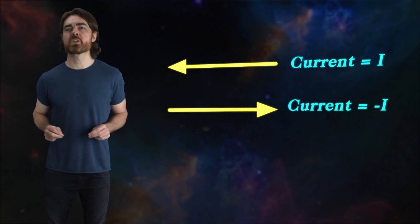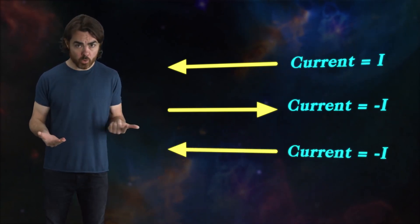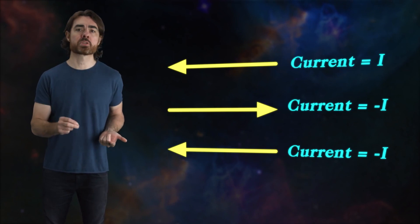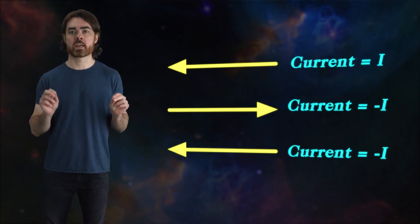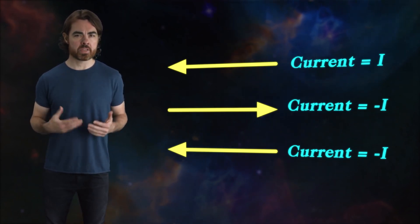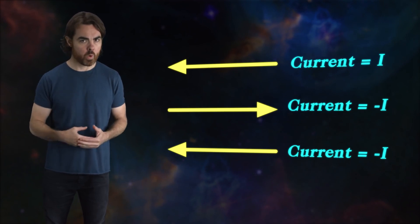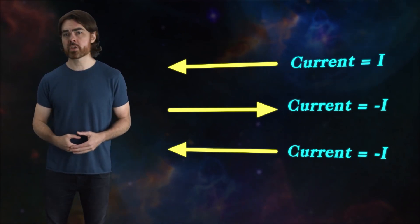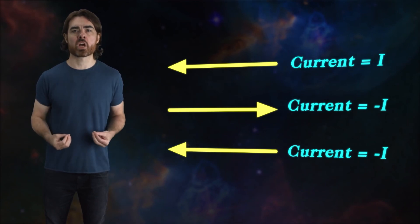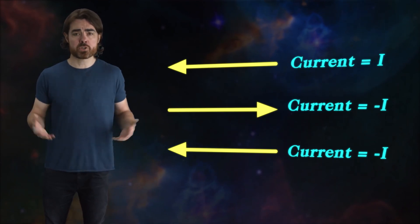And a positively charged positron moving to the left also produces the same opposite sign, minus i current. So you get the same flipped sign whether you reverse the direction of the motion of the electron, or if you give it the opposite charge by turning it into a positron.